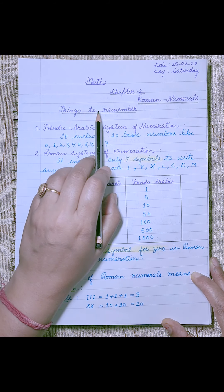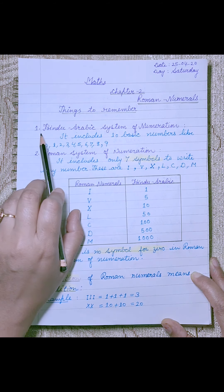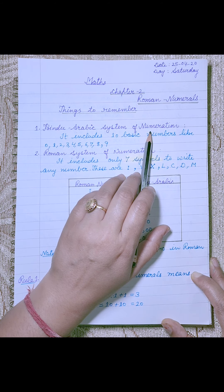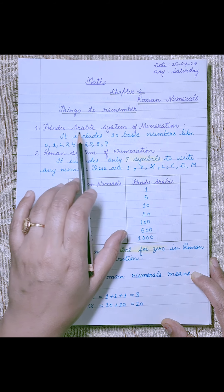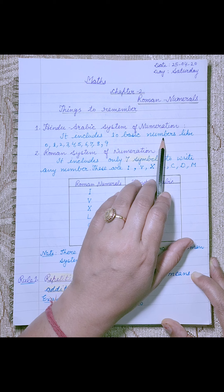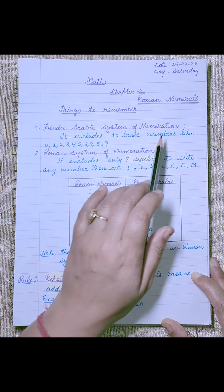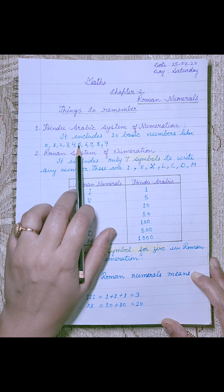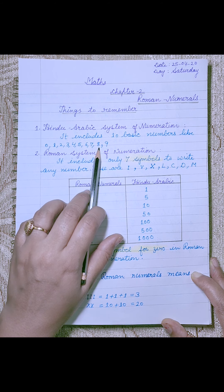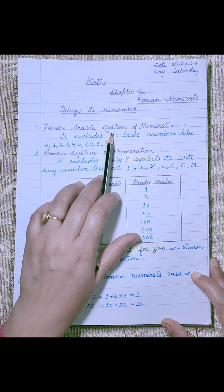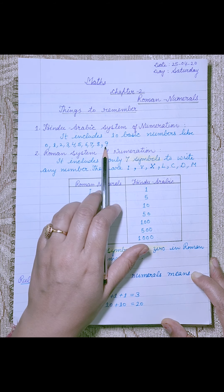Things to remember. First is the Hindu-Arabic system of numeration. It includes 10 basic numbers: 0, 1, 2, 3, 4, 5, 6, 7, 8, and 9. So in the Hindu-Arabic system, there are 10 numerals, from 0 to 9.